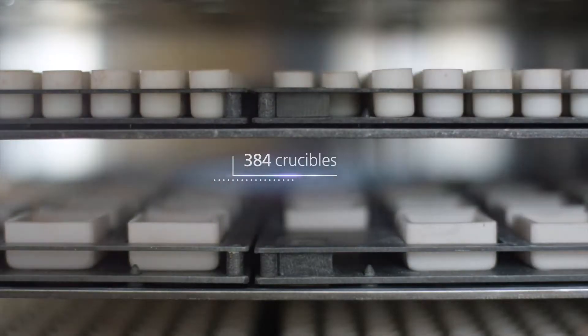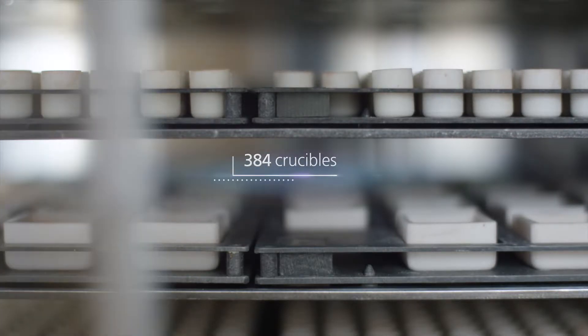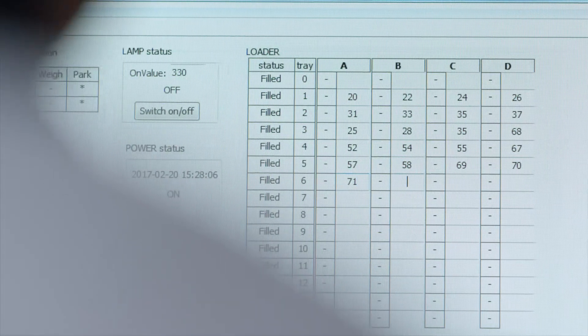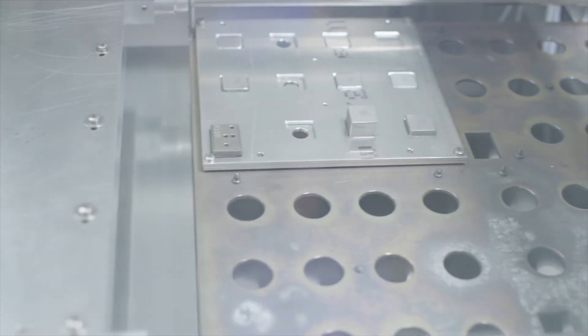A frame with up to four trays containing up to 384 crucibles is placed in the loading rack. The tray numbers are entered in the weighing software. A maximum of 14 trays can be placed in the loading rack.